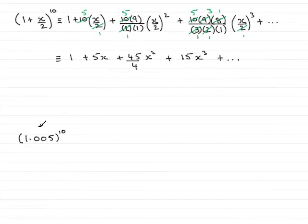Now in the next part, we're asked to use our expansion to work out the value of 1.005 to the power of 10, giving our answer to five decimal places.